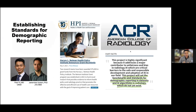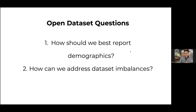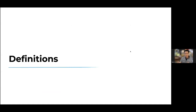Benchmarks and standards need to be established for how we report demographics, which ones should be reported, and how they should be disseminated — so be on the lookout for guidance coming down the pipeline. Some open questions: How should we best report demographics in graphics? How can we address data set imbalances — using previously trained algorithms or prospectively curating data? And how do we address label noise? NLP tools have been shown to themselves be biased, meaning certain demographic groups will have higher rates of inaccurate disease labels, which can also contribute to model bias.